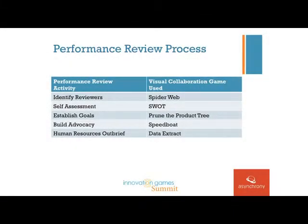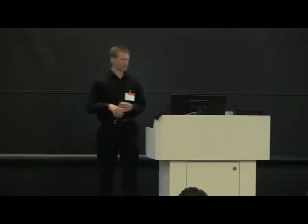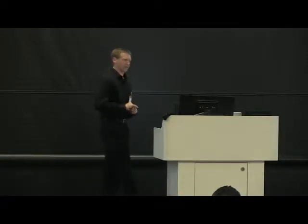The nice thing about using the IG platform is it's easy to extract the data out of the tool. Asynchrony has a parent company and we have to use a process for our performance reviews for our parent company. So I had to go into the tool, extract data out, and then put that into a form for an online system. But I could do an export, do post-processing, and almost copy and paste the report together. So the way you can run an end-to-end performance review process with a series of games is: identifying people to provide feedback using Spiderweb, doing a self-assessment using a SWOT analysis, setting goals using the product tree metaphor, using Speedboat to build advocacy, and then getting data out of the system.